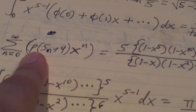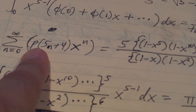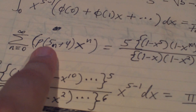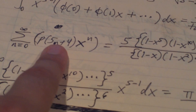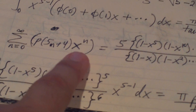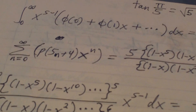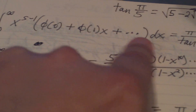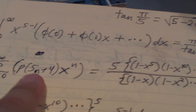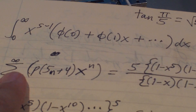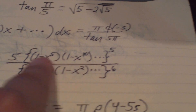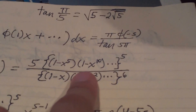Using some very clever ideas, Ramanujan found that this is equal to an infinite series involving the partition function — the total number of ways you can add up to get the number five n plus four. And that's our power series. So we use Ramanujan's Master Theorem and this power series to integrate this infinite quotient of powers of infinite products.